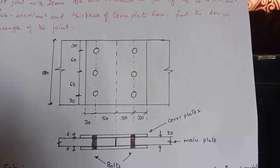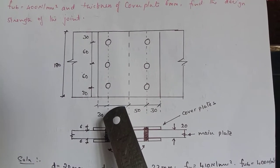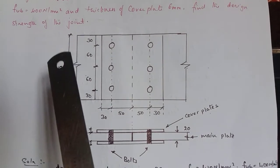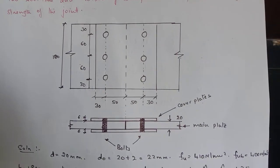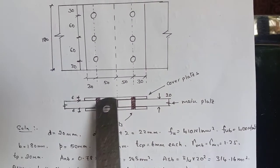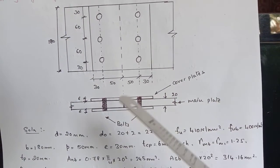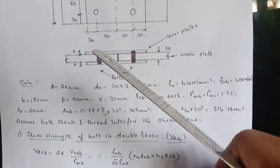So this is the joint we have here. The figure is clearly showing the pitch distances and edge distances and along with that it is also showing the gauge distances and end distances. So this is how the joint look like. So here we have the cover plate top side and bottom side. So by default it is a double shear.